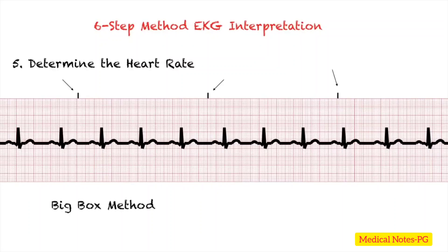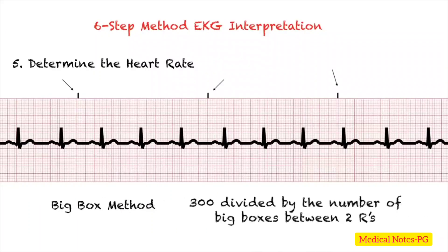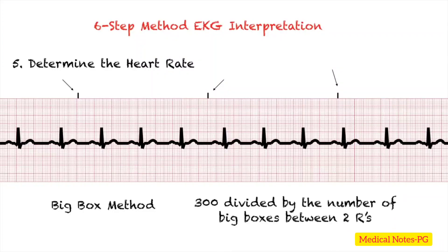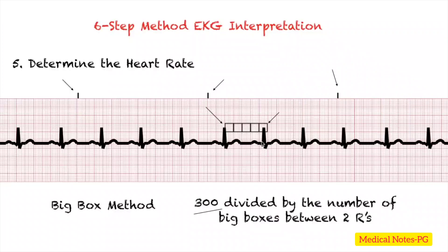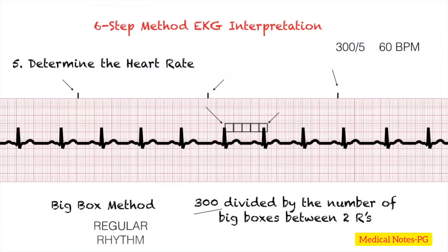The second method is the big box method: divide 300 by the number of big boxes between two R waves. For example, if there are five big boxes between two R waves, then 300 divided by 5 equals 60 beats per minute. This method works best for regular rhythms and is useful when you don't have a six-second strip.